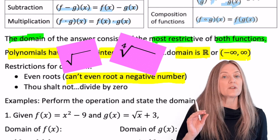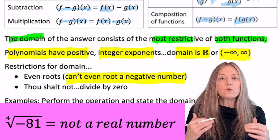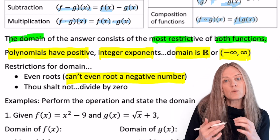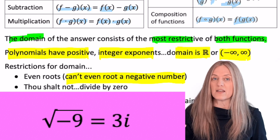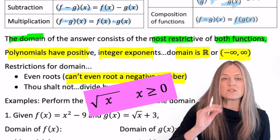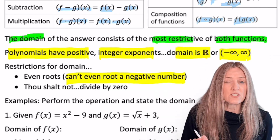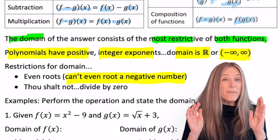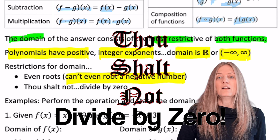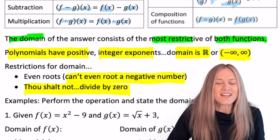There are two restrictions to watch for in this lesson. First, you cannot even-root a negative number — we're in the real number system, so I can't take the fourth root of negative 81 or the square root of negative 9 without getting an imaginary number. The domain is restricted with even roots to zero and positive numbers. The other restriction is the math commandment: thou shalt not divide by zero.